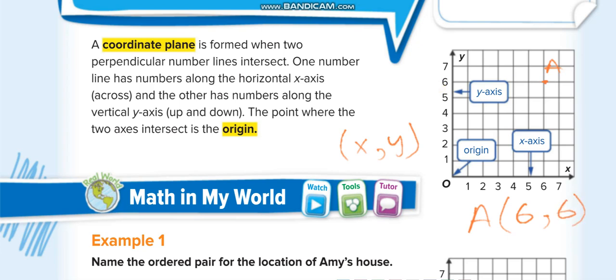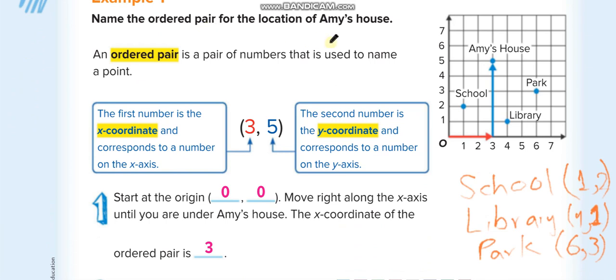Let's see this first example: name the ordered pair for the location of Amy's house. First, you see down on the X-axis: 3, and left on Y-axis: 5. So Amy's house is (3, 5). For school, it's (1, 2). For library, (4, 1). For park, (6, 3).